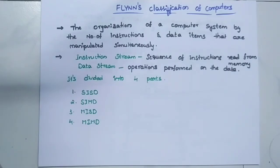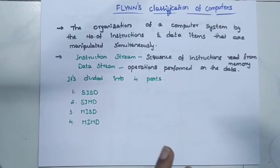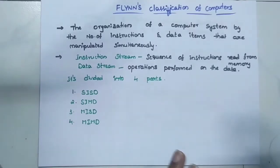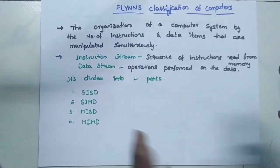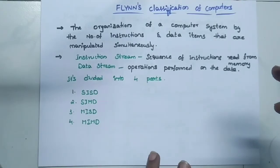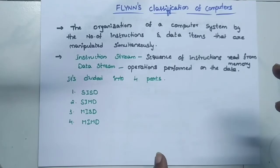Hi students. So the second category of general system architecture in computer architecture is the general system architecture concept, which is divided into two parts: stored program control concept and Flynn's classification of computers.